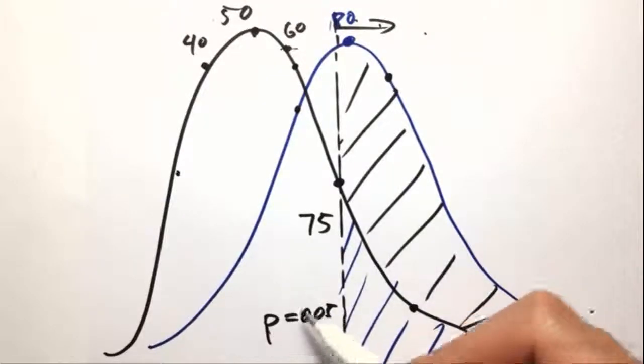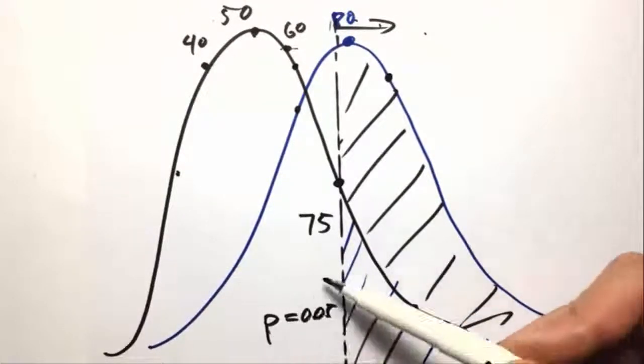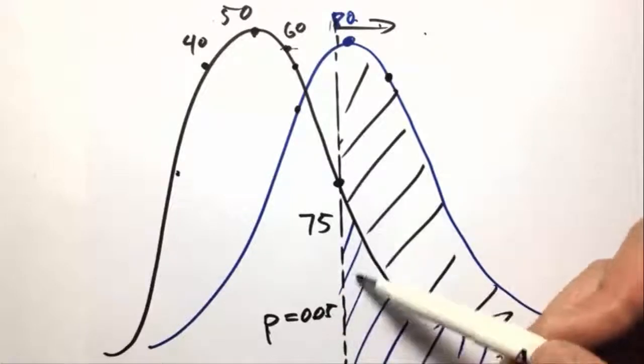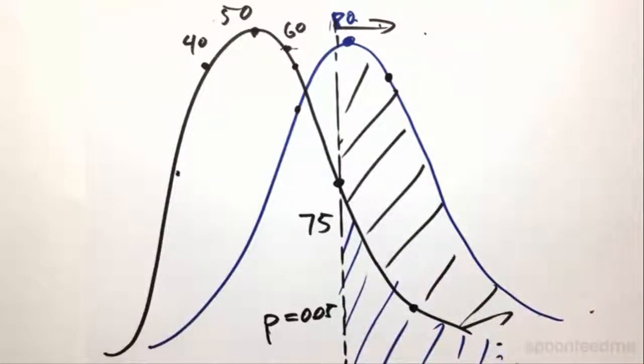So this 0.05, in other words, means that we have 95% confidence, but 5% margin of error. So that's basically all it means by the p-value.